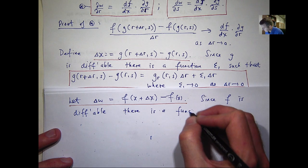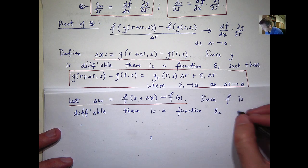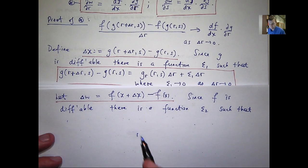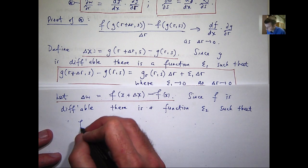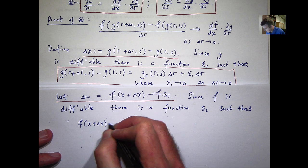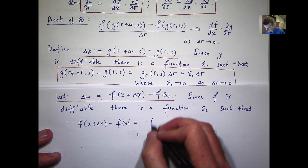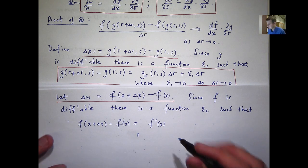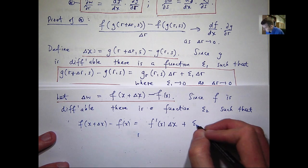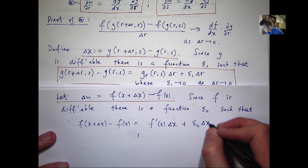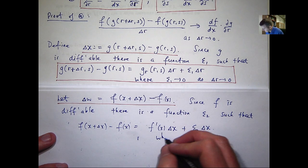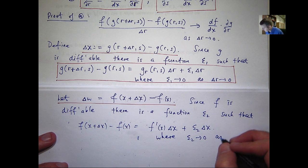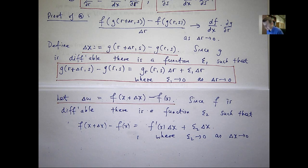And as such, there is a function. In this case, I'm just going to call it epsilon sub 2. Such that the following holds. Well, this difference can be expressed in the following form. Now, by f prime here, I mean df/dx, just the regular derivative for functions of one variable. And epsilon sub 2 goes to 0 as delta x approaches 0.